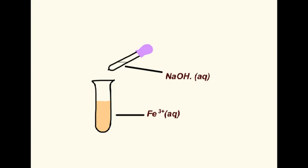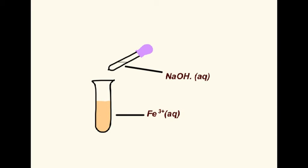But when it's added to a solution containing Fe 3 plus ions, a dark brown precipitate results.